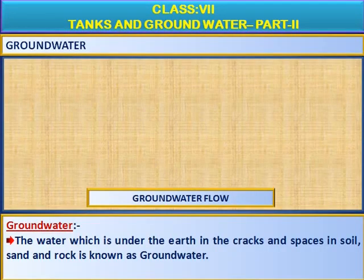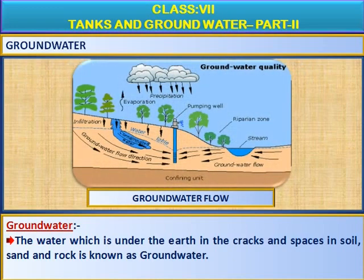Dear children, we know rainwater flows down the streams or rivers. Not only that, but it also slowly goes down into the soil. This water accumulates below the ground in the gaps between rocks, pebbles, and sand. This is called groundwater.